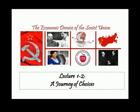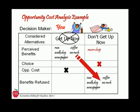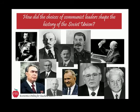Lecture 1-2: A Journey of Choices. In the first part of this lecture, we developed Economic Reasoning Propositions 1 and 2 within the context of personal decision-making, introducing a graphic that helps lay out the steps of opportunity cost analysis. In Part 2, we'll use that economic reasoning tool to look at the choices made by the early Soviet leaders who came to power in the Bolshevik Revolution.